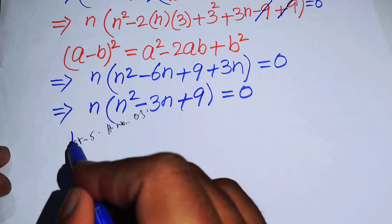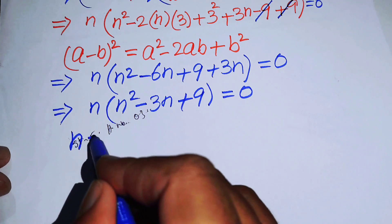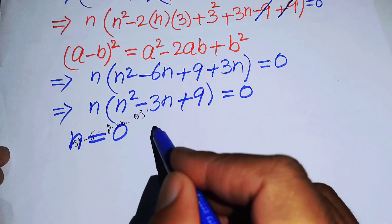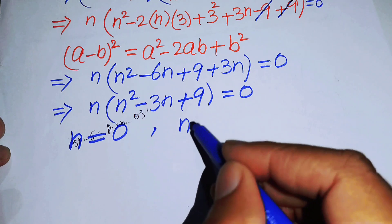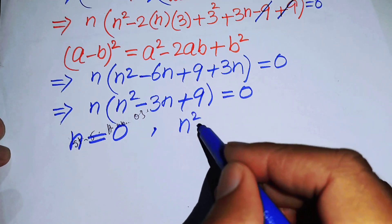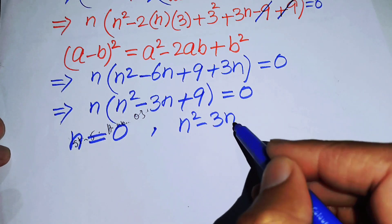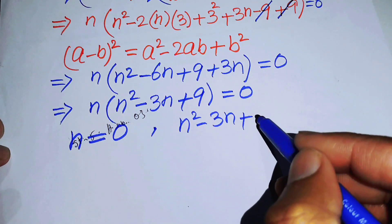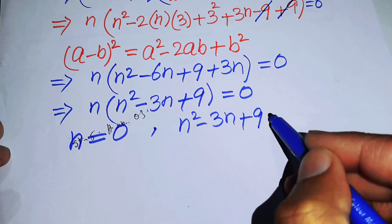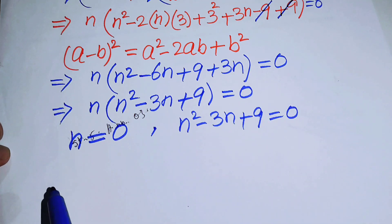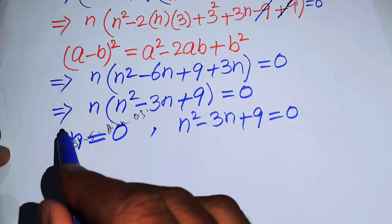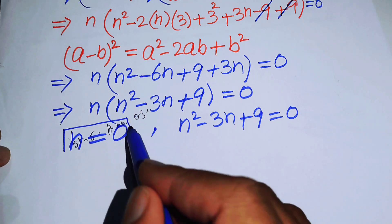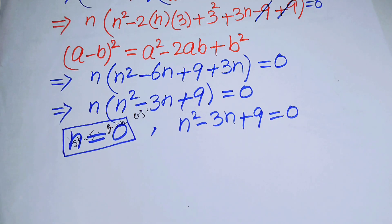Here we have two cases. The first case gives n equals 0, and the second case is the quadratic n squared minus 3n plus 9 equals 0. So the first real solution is n equals 0.